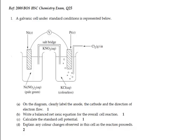Now let's have a read of the question. It says a galvanic cell under standard conditions is represented below. So we have here our cell. On the diagram, clearly label the anode, the cathode and the direction of electron flow. That's for one mark.